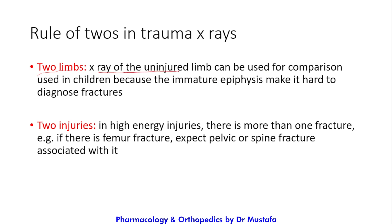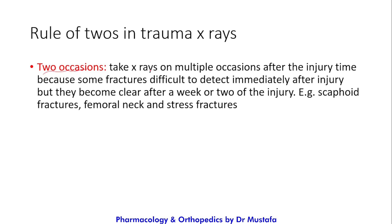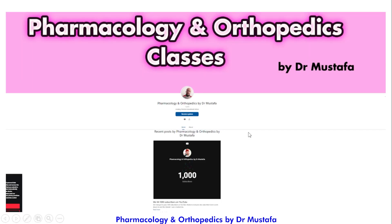Third, take X-rays of two limbs — the injured limb and the opposite limb for comparison — especially useful in children because immature epiphyses make fractures harder to diagnose. Fourth, look for two injuries, since high-energy injuries often involve more than one fracture; for example, a femoral fracture may be associated with a pelvic or spine fracture. Fifth, take X-rays on two occasions, as some fractures are difficult to detect immediately but become clear one to two weeks later — for example, scaphoid fractures, femoral neck fractures, and stress fractures.